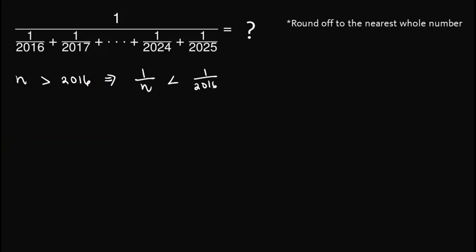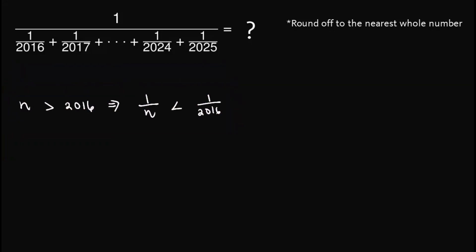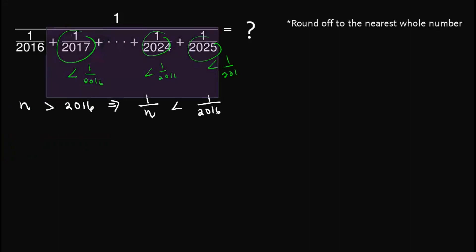So with that, we know that since 2017 is greater than 2016, then this one is less than 1 over 2016. This one is also less than 1 over 2016. This one as well is less than 1 over 2016. In fact, every element in here is less than 1 over 2016.